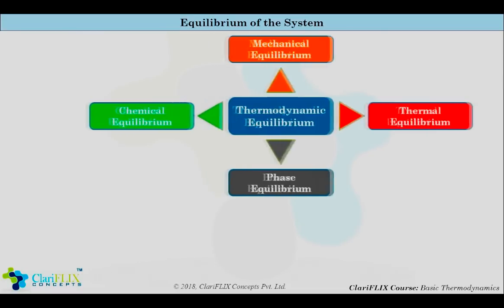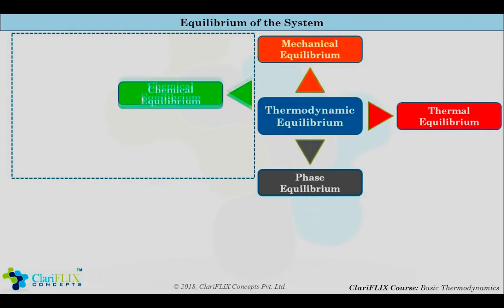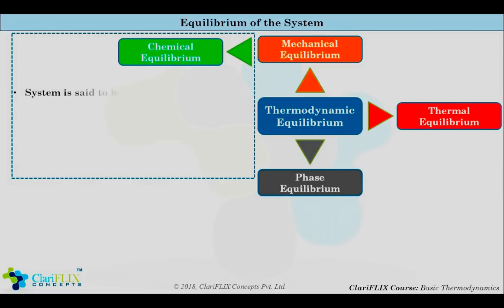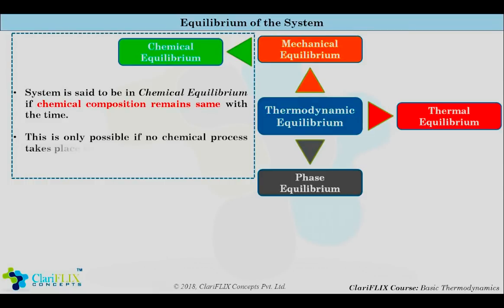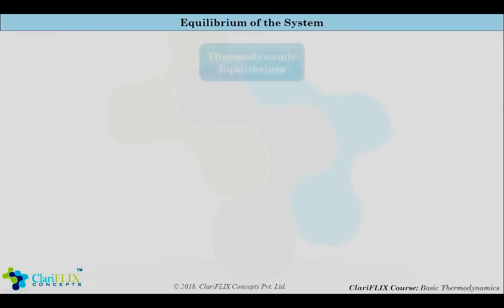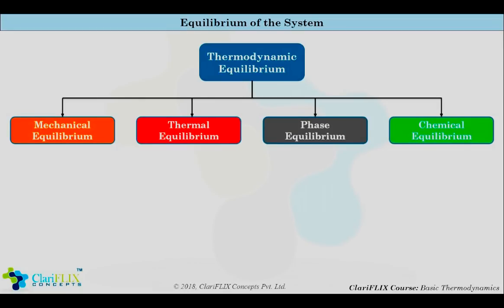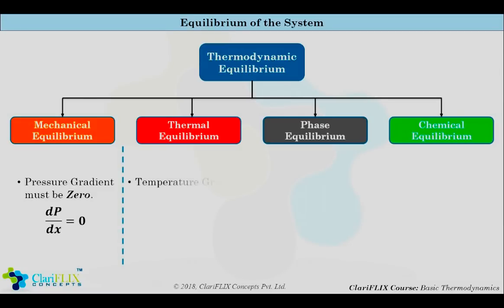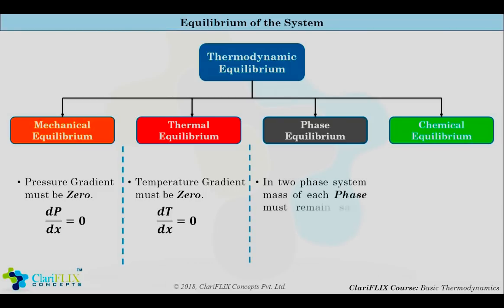Now let us look at the fourth equilibrium called chemical equilibrium. A system is said to be in chemical equilibrium if the chemical composition remains the same with time within the system, and this is only possible when there is no chemical reaction taking place within the system. In summary: in mechanical equilibrium the pressure gradient must be zero, in thermal equilibrium the temperature gradient must be zero, and in phase equilibrium the mass of each phase must remain the same with time.